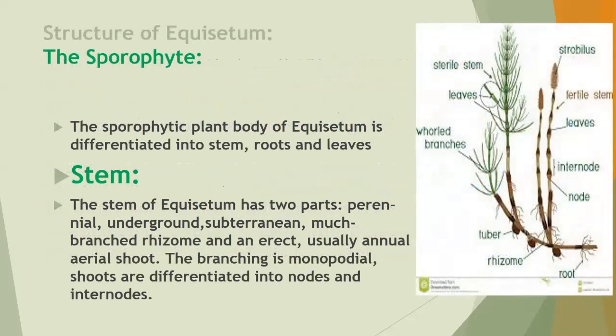Next, the sporophytic structure of Equisetum. The sporophytic plant body is differentiated into three parts: mainly stem, roots, and leaves.